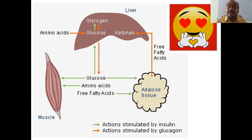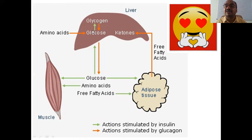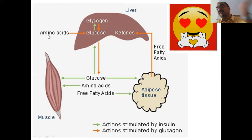Glucagon converts glycogen into glucose — glycogen becomes glucose. Whereas insulin has the opposite action: glucose is converted into glycogen, amino acids are converted to proteins, and this glucose is released back into the blood. These are the important actions to write in examinations.